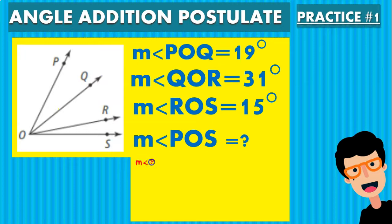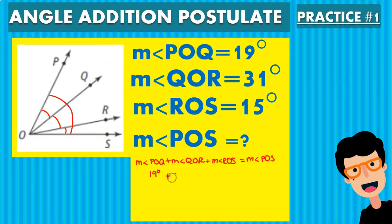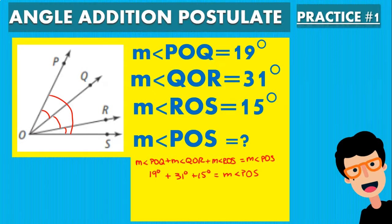So the measurement of angle POQ plus the measurement of angle QOR plus the measurement of angle ROS is going to give us the measurement of angle POS. We substitute the values of 19, 31, and 15 degrees. That addition gives us the answer for the measurement of angle POS. So 19 plus 31 plus 15 is 65 — the answer is 65 degrees for the measurement of angle POS.